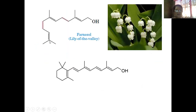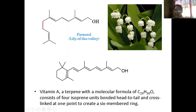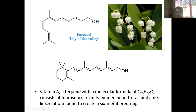If it has four isoprene units, that means 20 carbons — 20 divided by 5 is 4. Even vitamin E is in the form of a terpene with molecular formula C20H30. How many isoprene units? Divide the carbon count by 5: 20 divided by 5 is 4. So it consists of 4 isoprene units bonded head to tail.